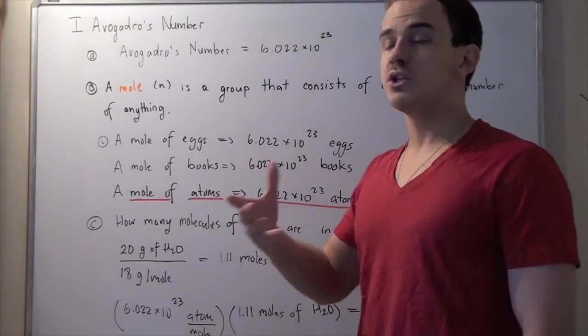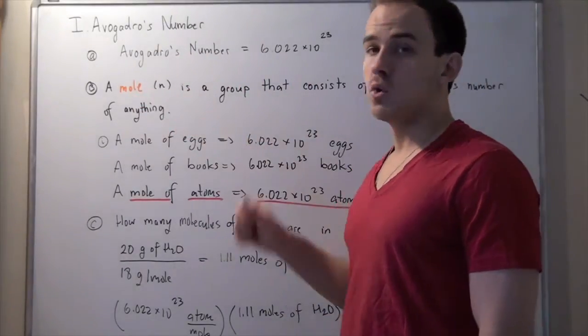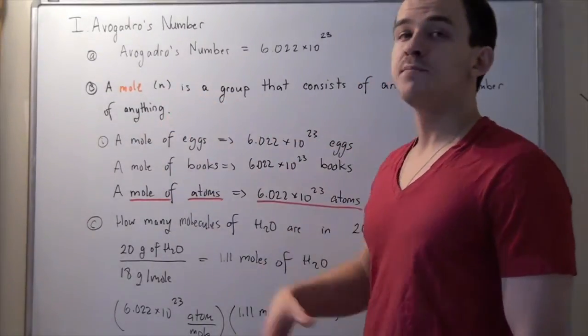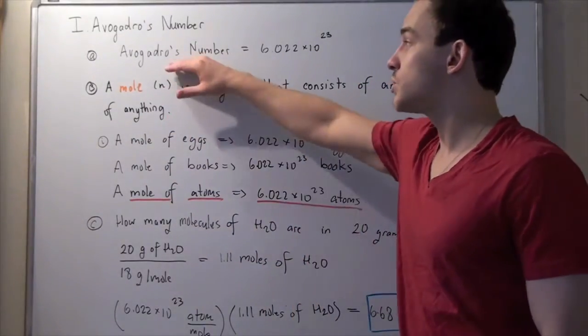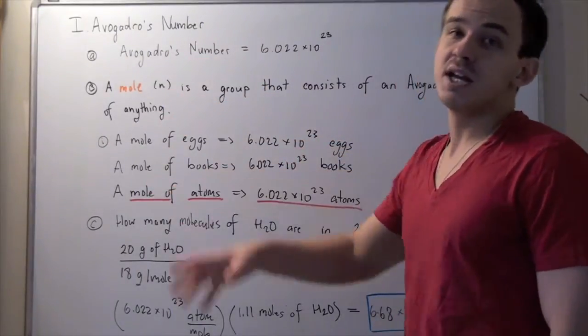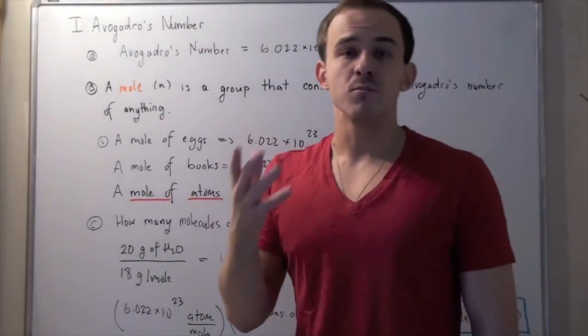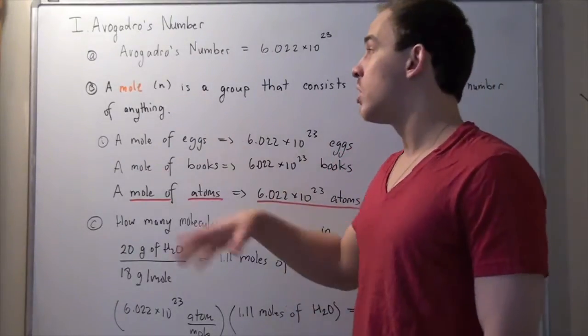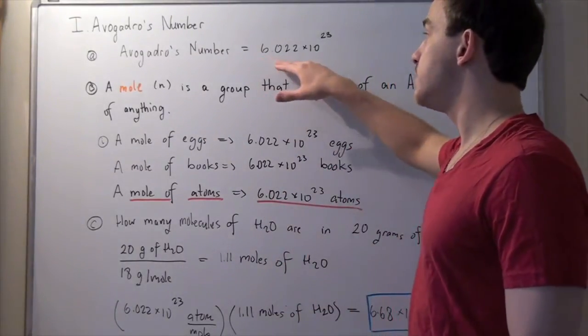Avogadro's number is usually used in relation with moles. A mole, which is represented by a lowercase n, is a group that consists of an Avogadro's number of anything. In the same way that a dozen represents a group of 12, a mole represents a group of this many things.